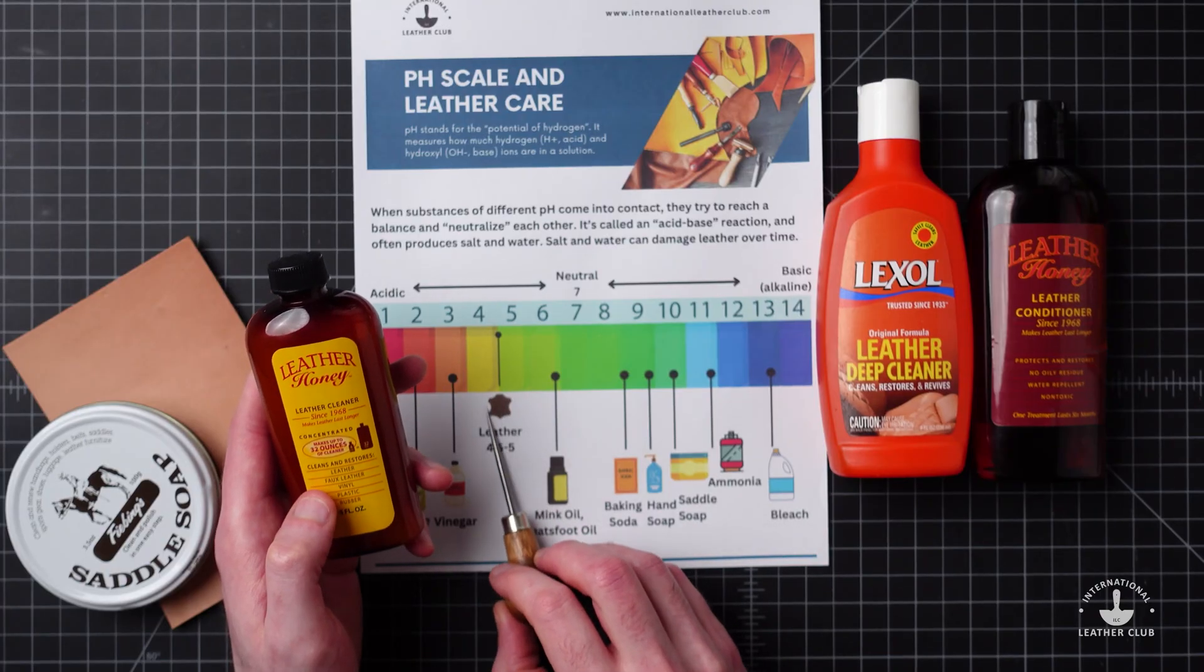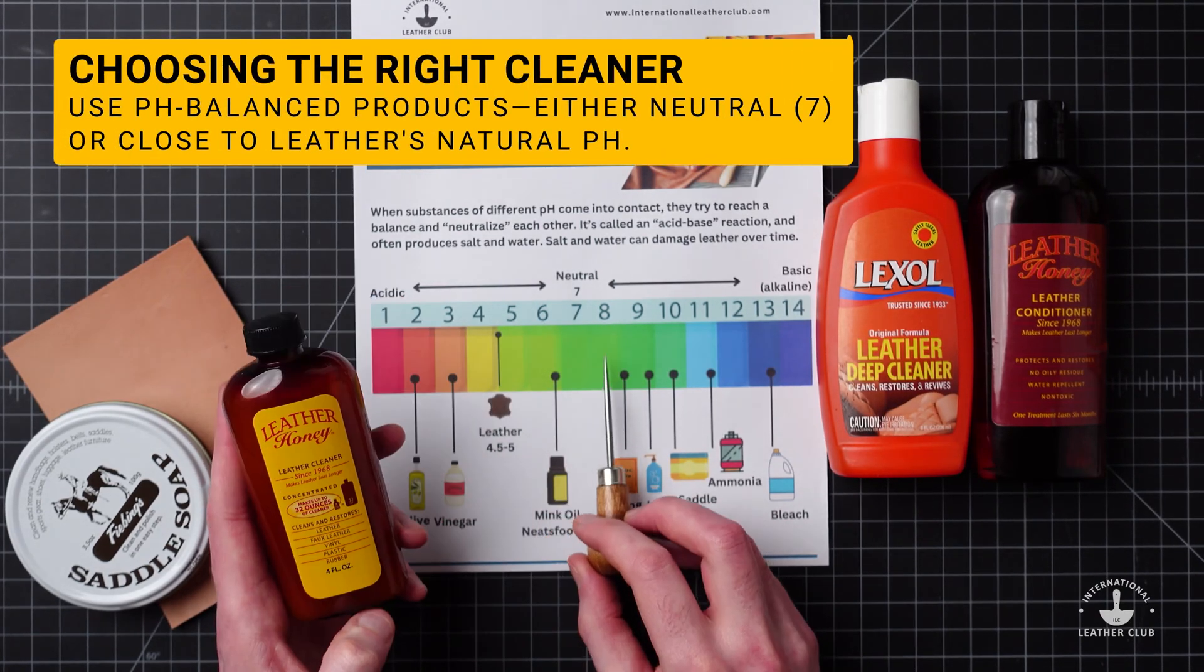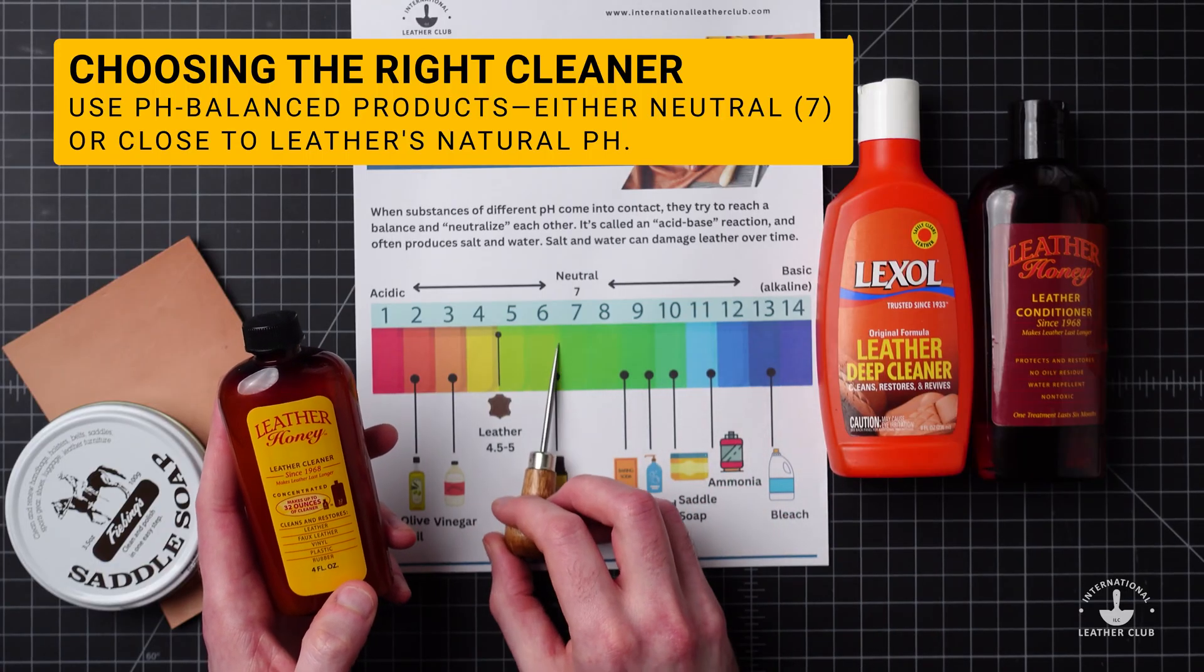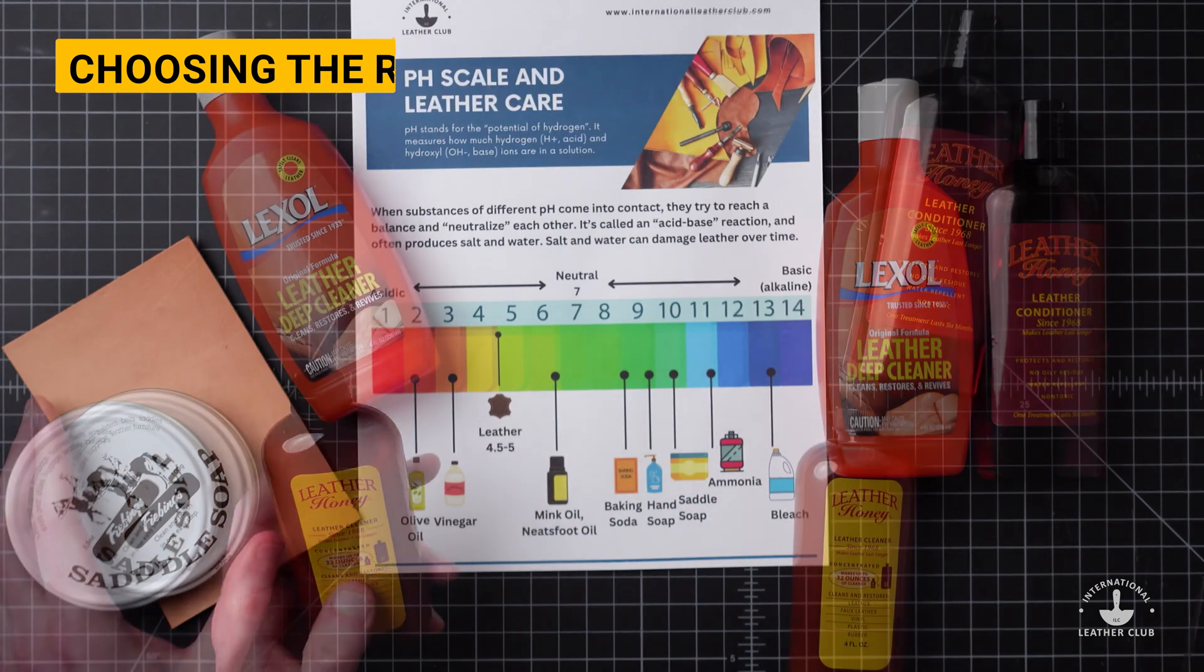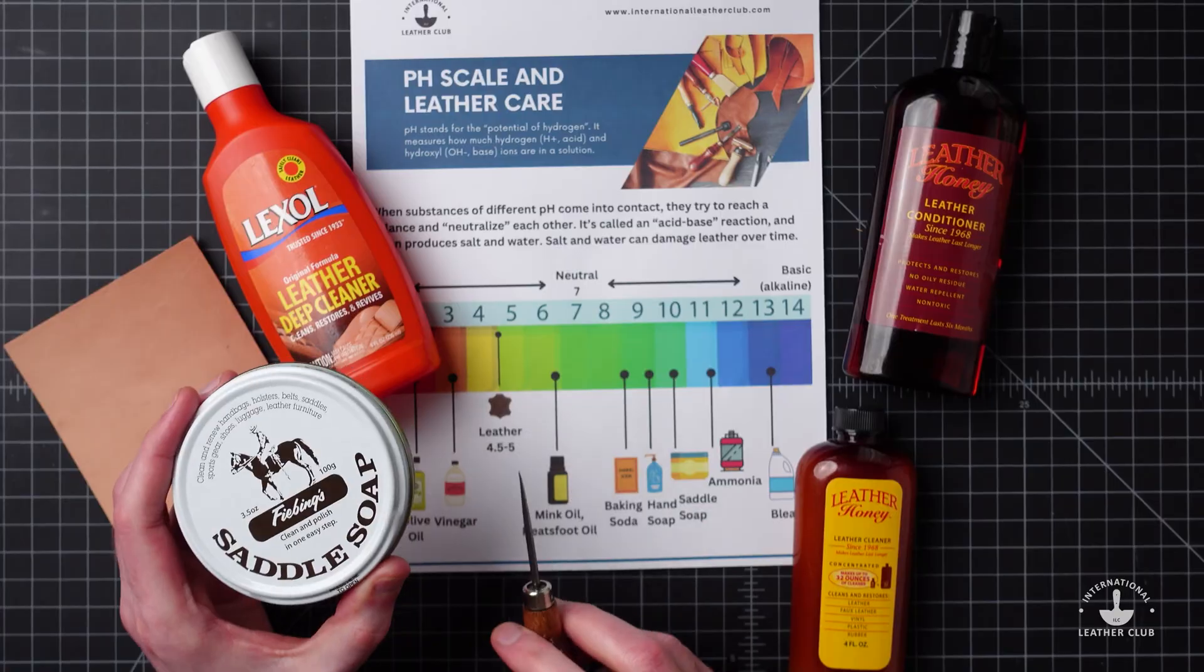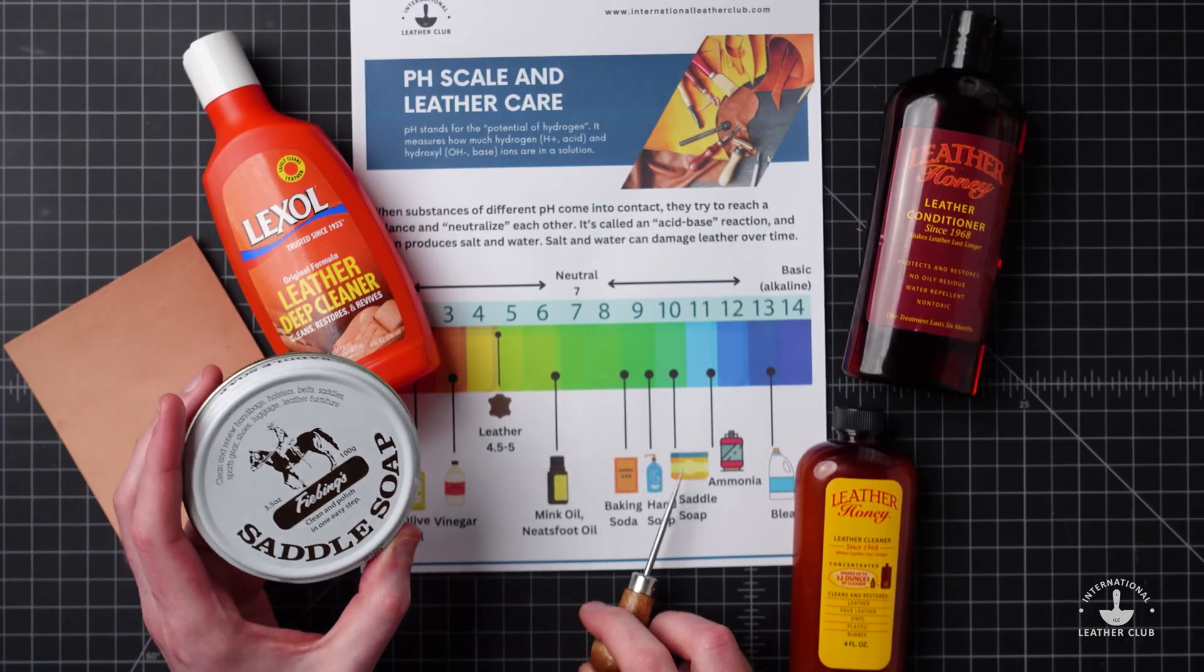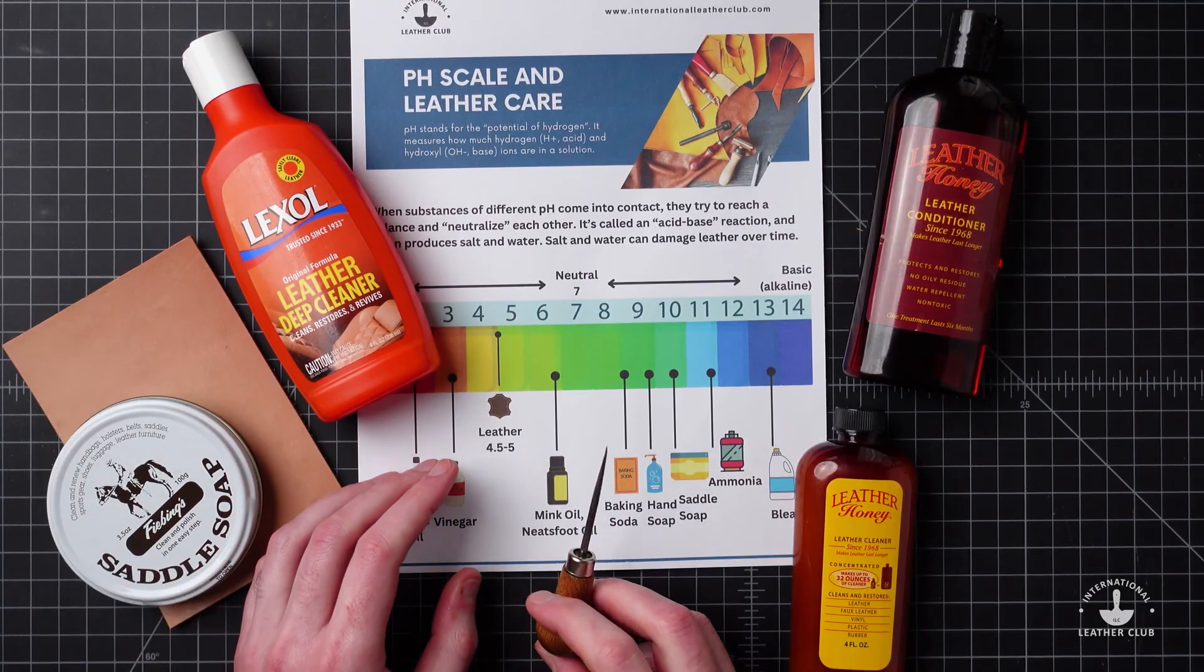Anything 8 or above, or 6 or down, you're going to start to see those impacts of the pH. It can be helpful to check things out - for example, saddle soap is really popular for certain things and that's going to be around a pH of 10, so almost double that of leather.